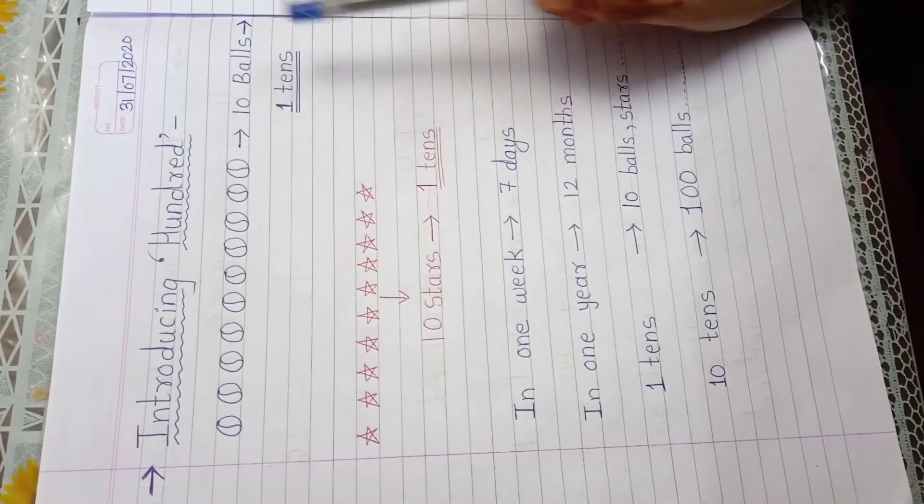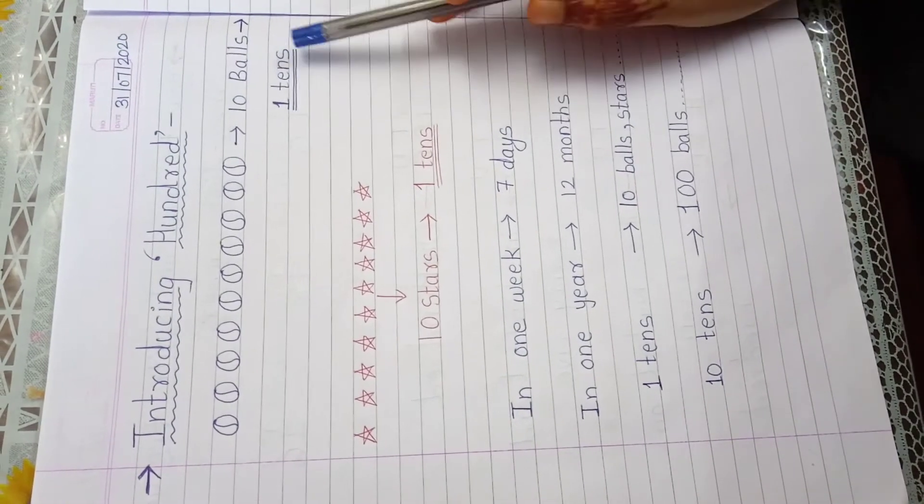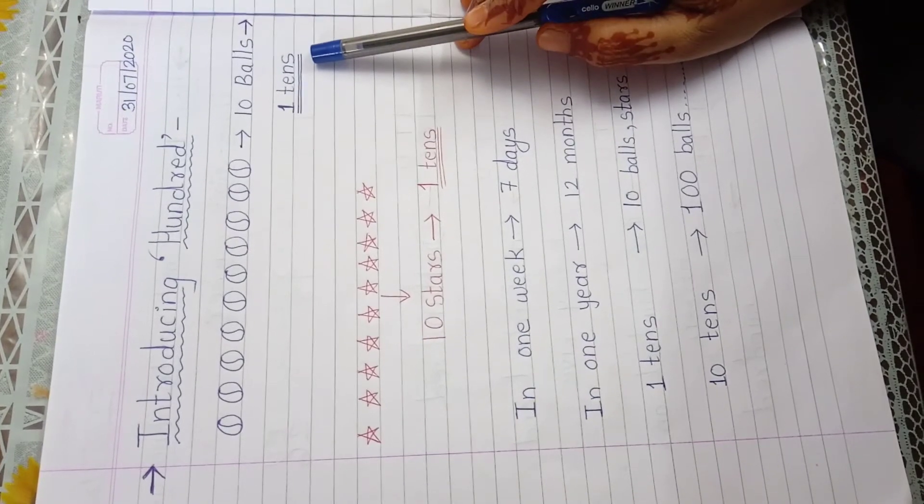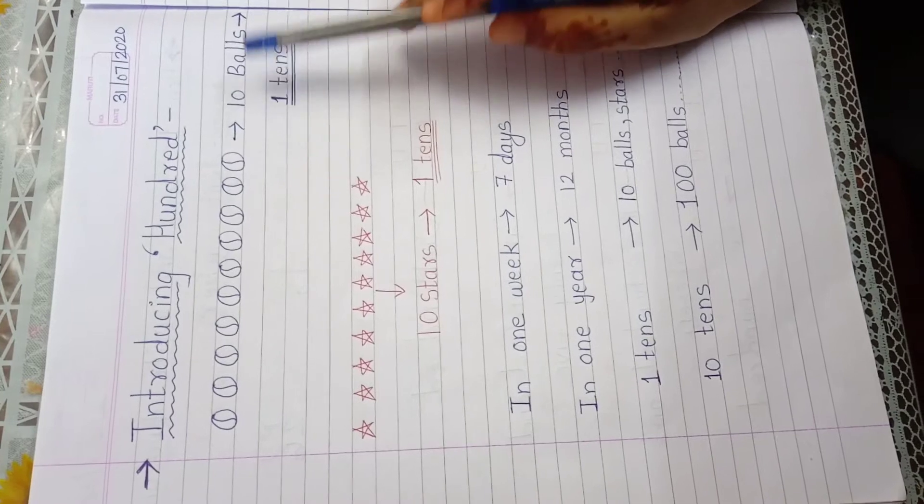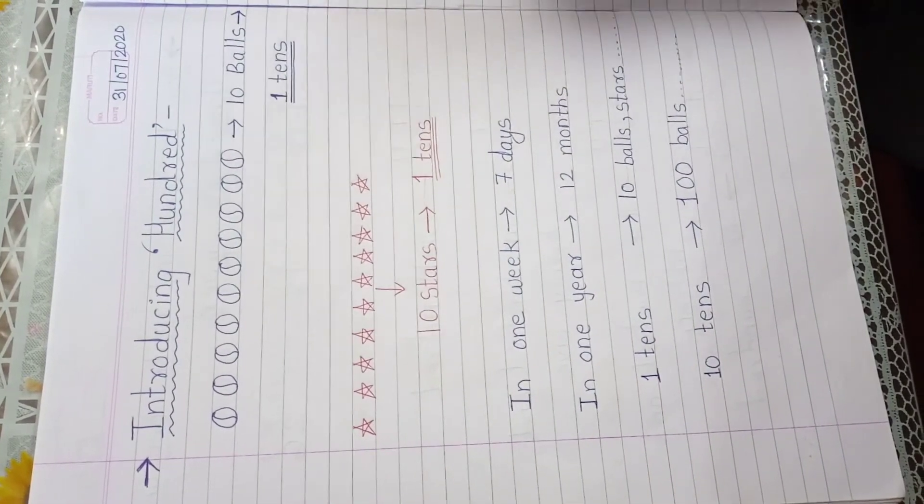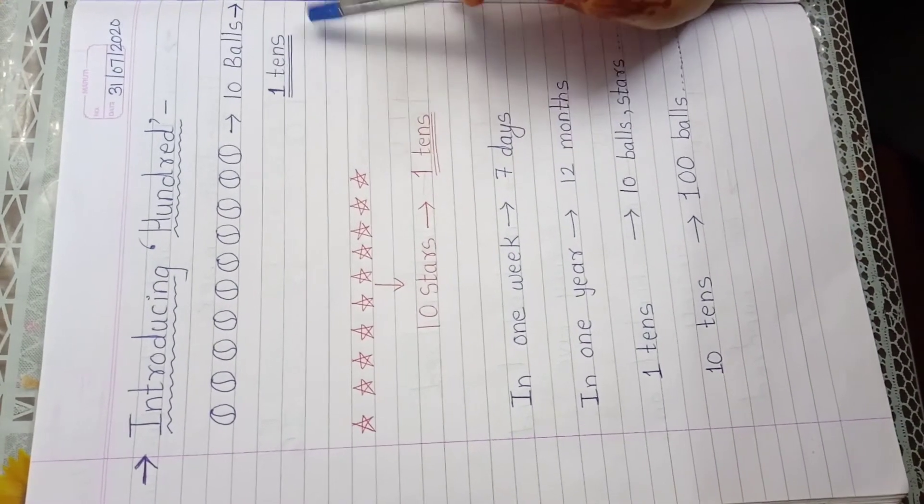So 10 balls means how many tens? You know how many tens? Okay. So 10 balls means 1 tens. Understand? Means 1 tens is equal to 10 balls or 10 stars, 10 umbrellas, 10 ice creams. Understand? So 10 balls means 1 tens.